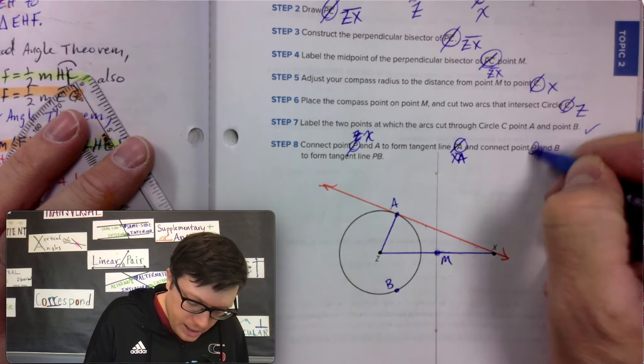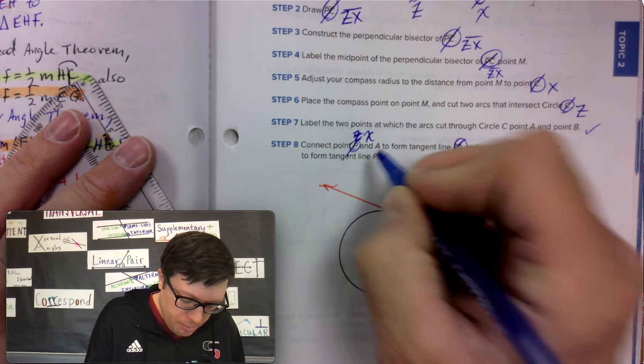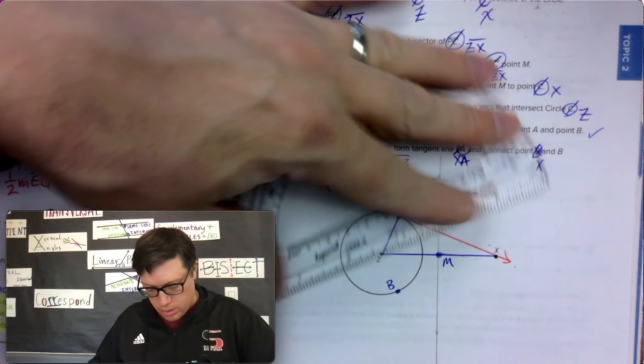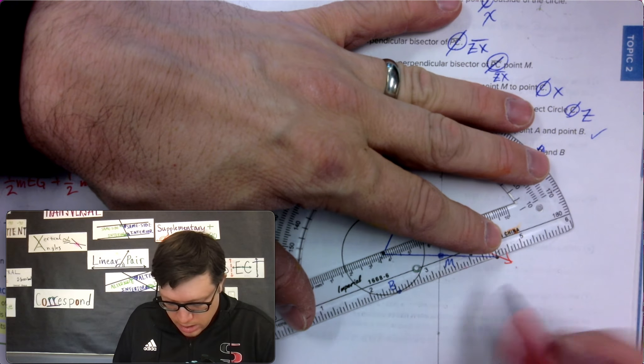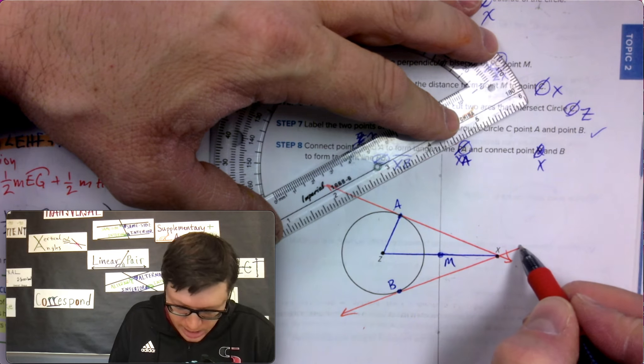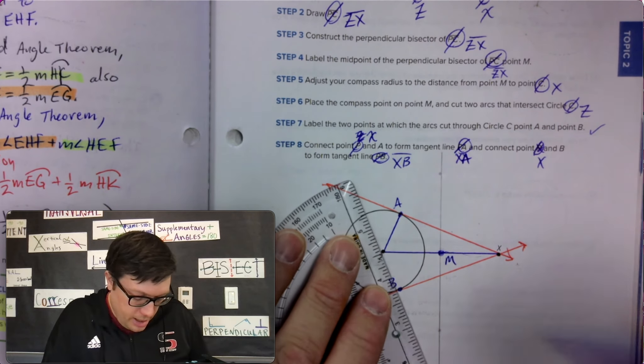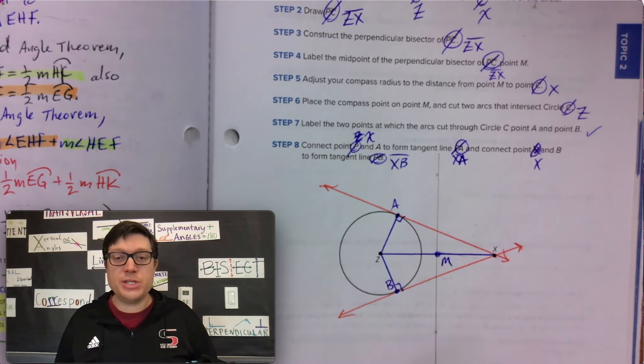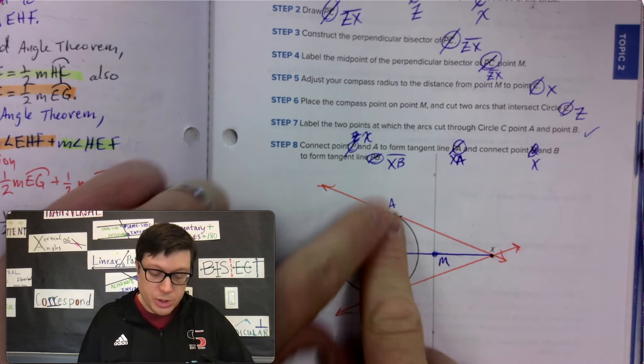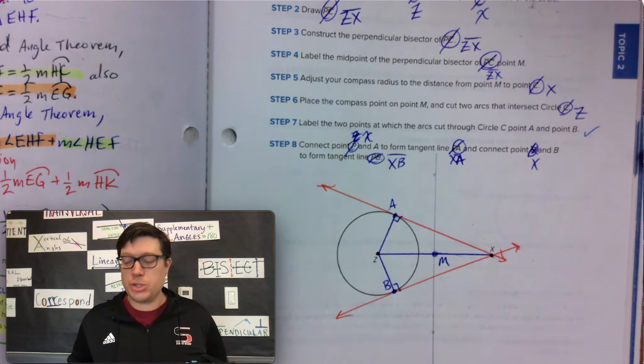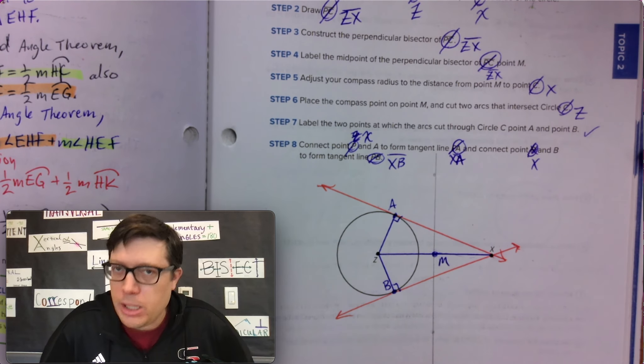And then also do the same thing. Connect X and B to form tangent line XB. So we could also draw a tangent line this way. And there it is. Tangent lines only touch the circle once and they form a right angle with the center of the circle as well. So those are two tangent lines made off of point X, not on the edge of the circle created using perpendicular bisectors.